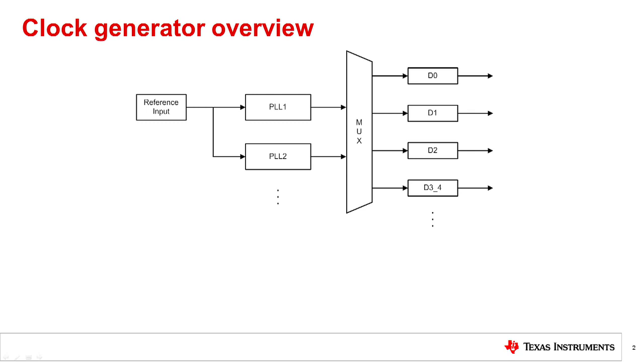Let's start by introducing the basic structure of a clock generator. A clock generator produces multiple frequency outputs from a single reference input through one or more phase-locked loops. The reference input to a clock generator can be a crystal, an oscillator, or a clock output from a previous stage in the clock tree.